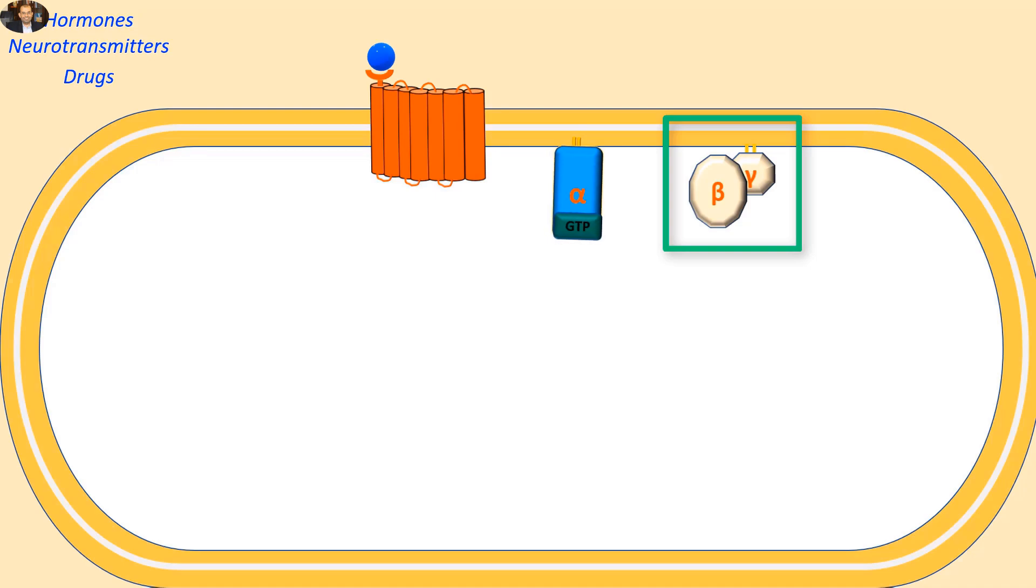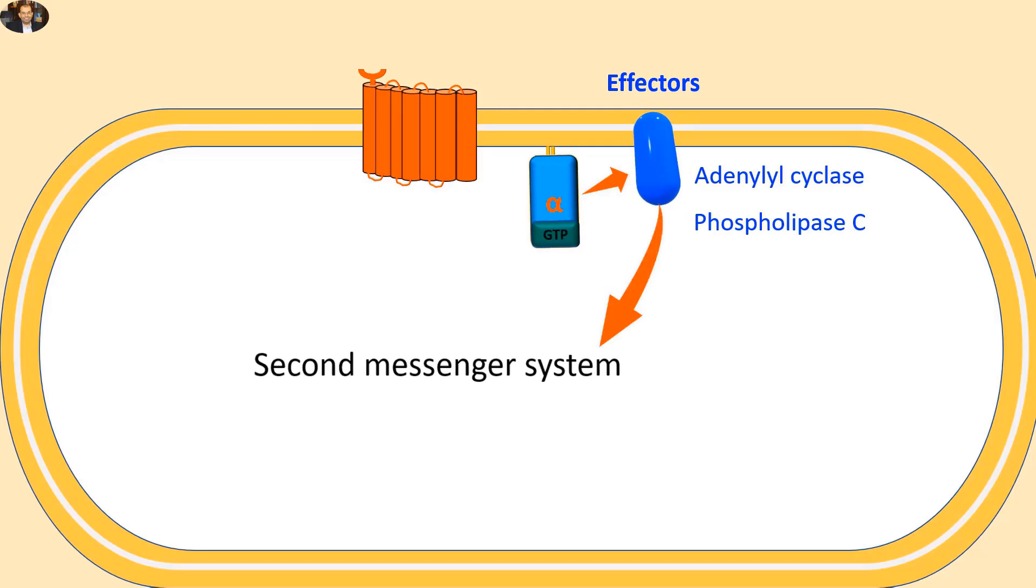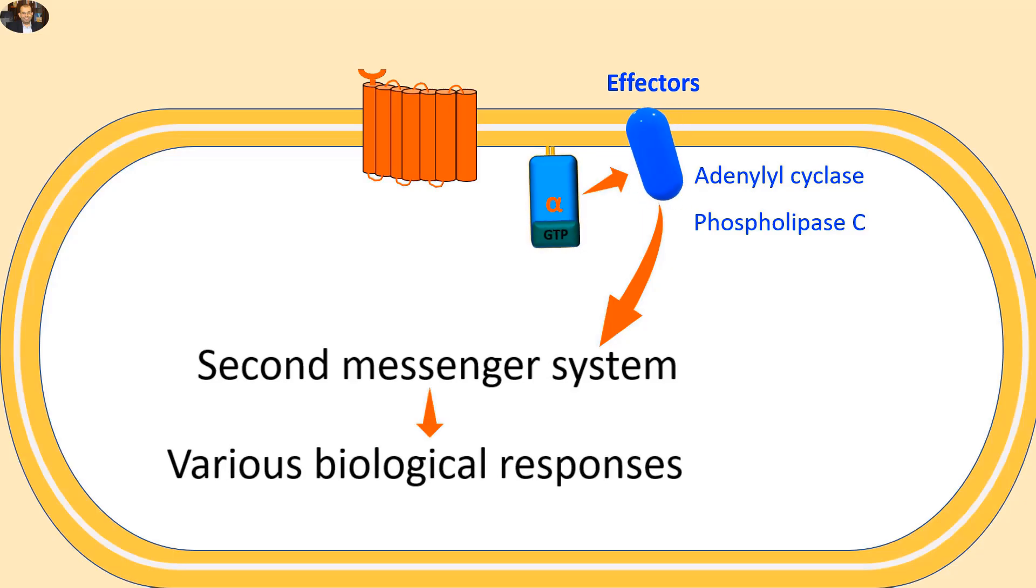The beta and gamma subunits form a separate beta-gamma dimer. Then both the alpha subunit and beta-gamma dimer activate various effector targets. For example, the alpha subunit activates membrane-bound enzymes such as adenylyl cyclase and phospholipase C, which in turn activate a cascade of second messenger reactions, leading to various biological responses.